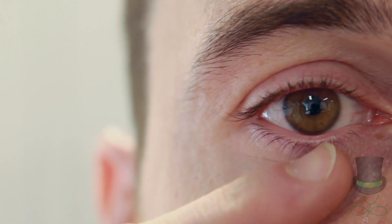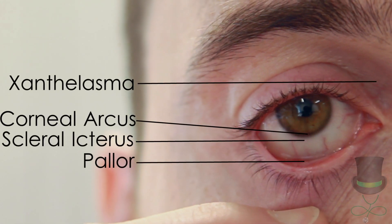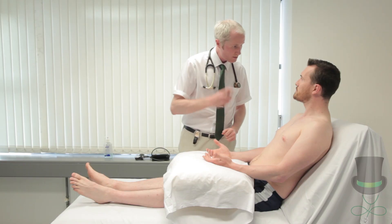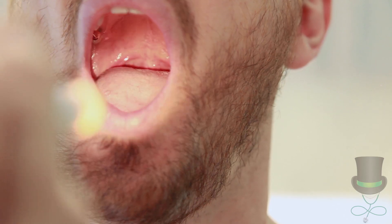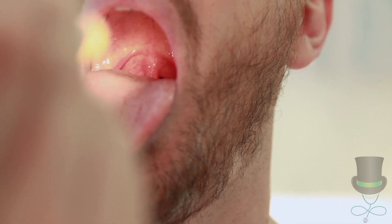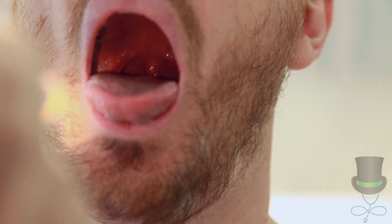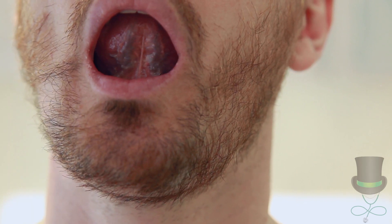The eyes are examined for conjunctival pallor, scleral icterus, corneal arcus and xanthelasma. Can you open your mouth? Look around the patient's mouth and ask them to open it. Just stick out your tongue and say 'ah'. Note any peripheral or central cyanosis and comment on the patient's dentition.